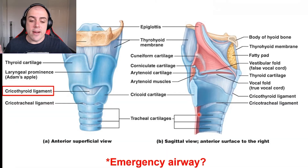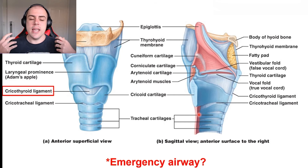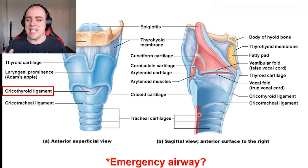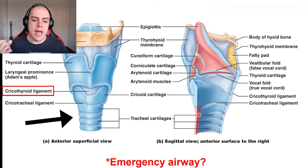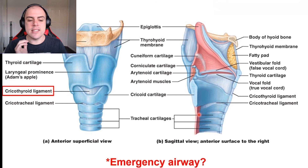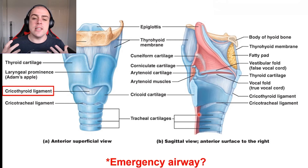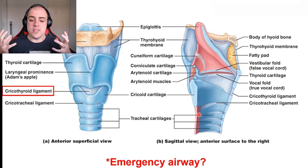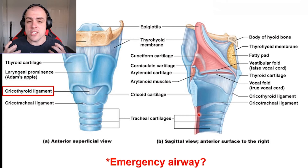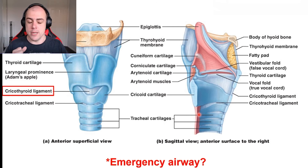When looking at our larynx and moving down further into our trachea, there is the presence of cartilage. What is also important here is our cricoid cartilage. The purpose of this cartilage is that it is rigid — it's quite strong — and it helps keep that windpipe open at all costs.